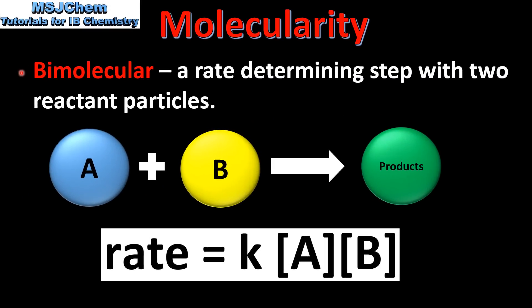Next we have bimolecular. This is a rate determining step with two reactant particles. So here we have two reactant particles A and B reacting together to form one or more products. And here's a possible rate expression for a bimolecular reaction.